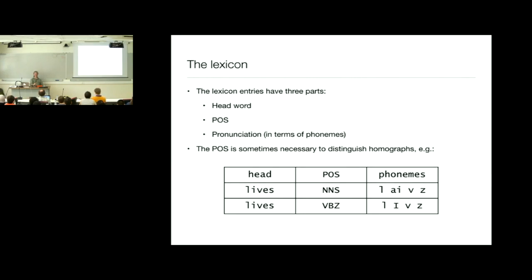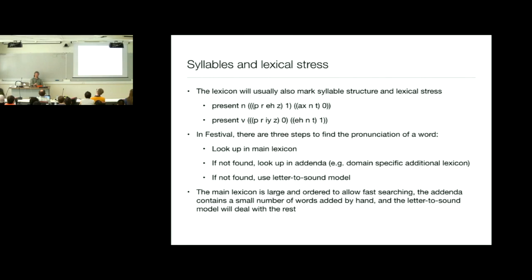We need more than just a string of pronunciation symbols — we need also some structure within the word: the syllable structure of the sounds, not the morphology. This is absolutely essential when we come to deciding how to pronounce things, whether we're doing unit selection or statistical models. The syllable structure is useful in choosing appropriate units and where to make joins, or as predictive features for regression onto acoustic parameters of a vocoder. The most obvious reason is that syllable structure helps us decide where to put prominences and prosodic events.